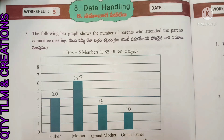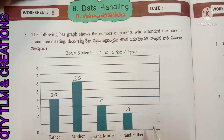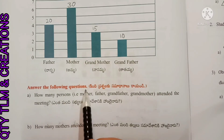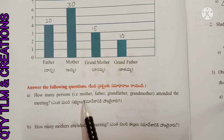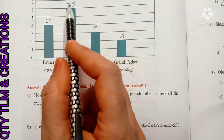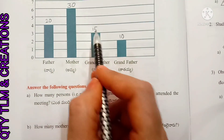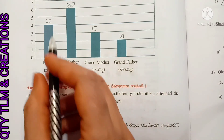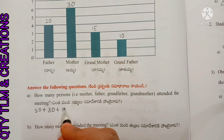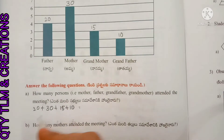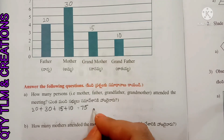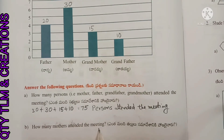Grandfathers: 2 boxes, so 2 fives are 10 grandfathers attended the parents committee meeting. First question: how many persons attended the meeting? Total: 20 plus 30 plus 15 plus 10 equals 75 persons attended the meeting. How many mothers attended? 30 mothers attended the meeting.